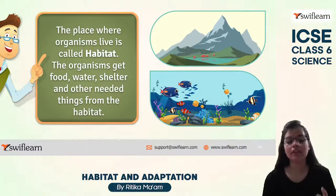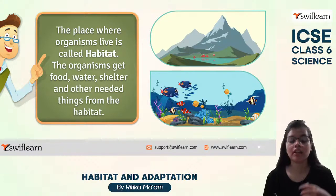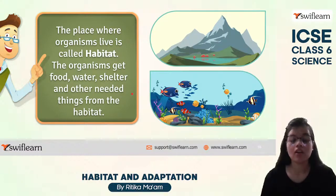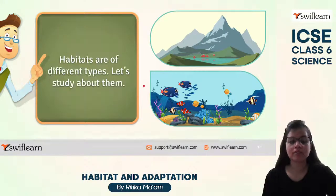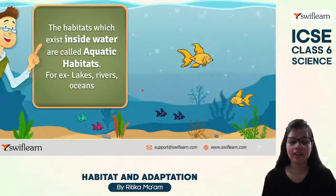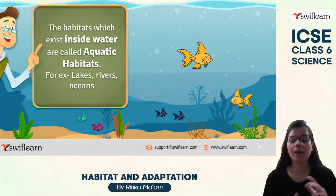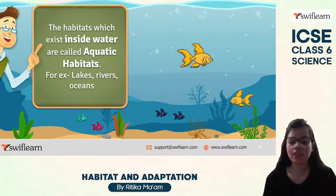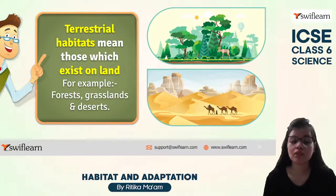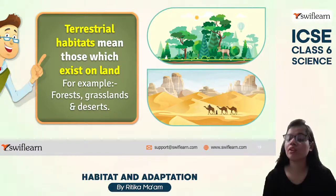What is the use of habitat? The organisms which live in a particular habitat get their food, water, shelter, and all other things they need to survive from that habitat. So the basic definition of habitat is: the place where organisms live and from which they get food, water, shelter, and all necessary things. One type is aquatic habitat — the habitat that exists inside water, like in seas, oceans, ponds, and rivers.